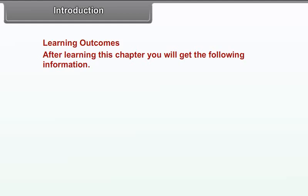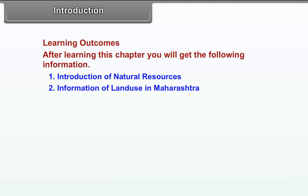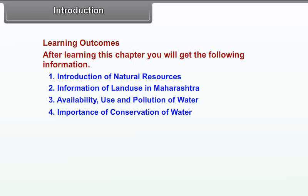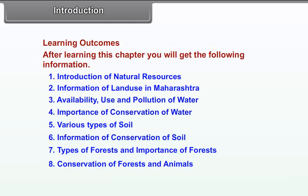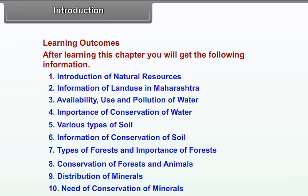Learning Outcomes: After learning this chapter, you will get the following information: 1. Introduction of Natural Resources, 2. Information of Land Use in Maharashtra, 3. Availability, Use and Pollution of Water, 4. Importance of Conservation of Water, 5. Various Types of Soil, 6. Information of Conservation of Soil, 7. Types of Forests and Importance of Forests, 8. Conservation of Forests and Animals, 9. Distribution of Minerals, 10. Need of Conservation of Minerals.